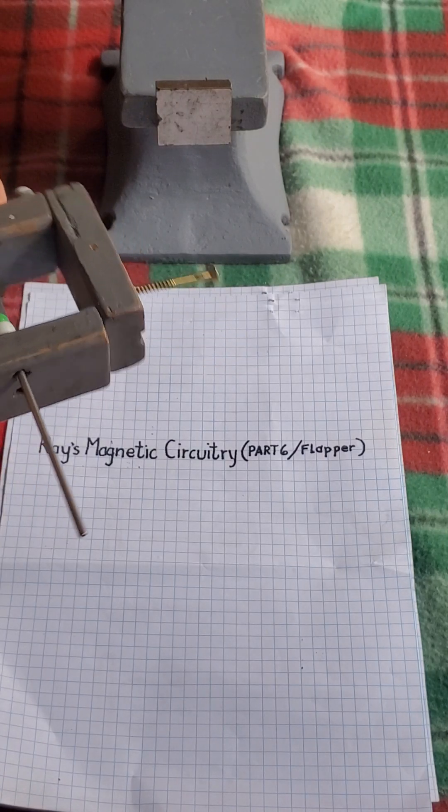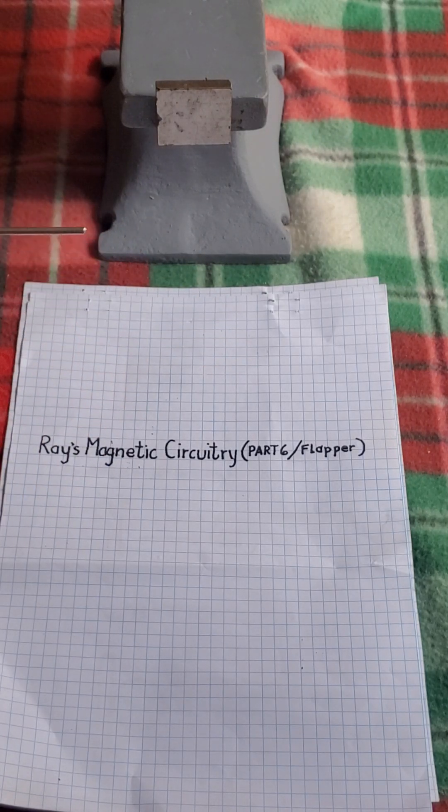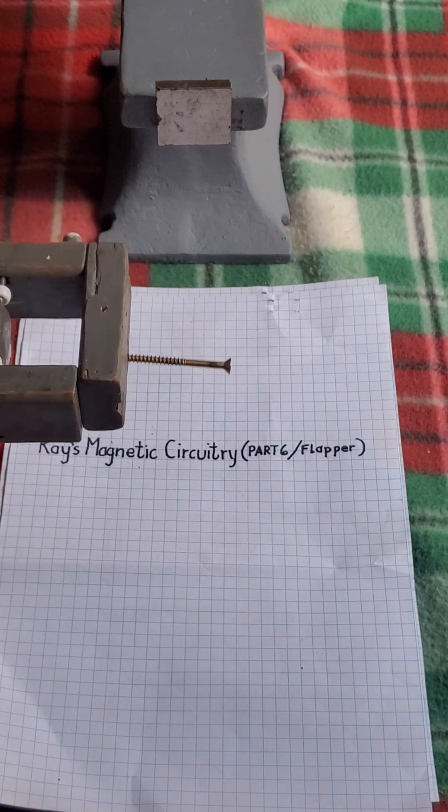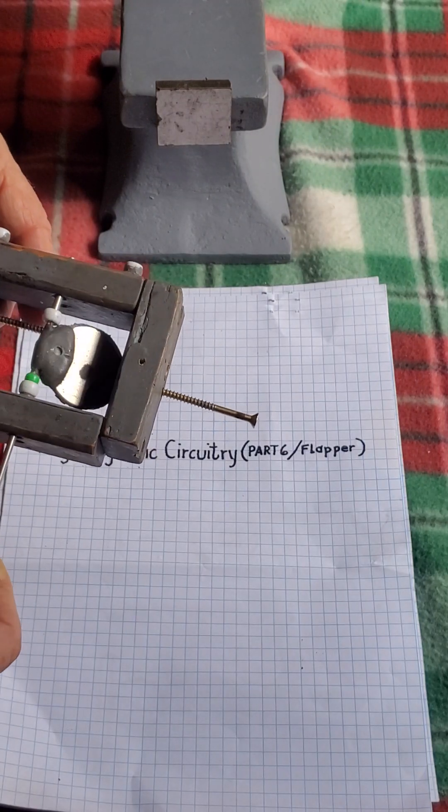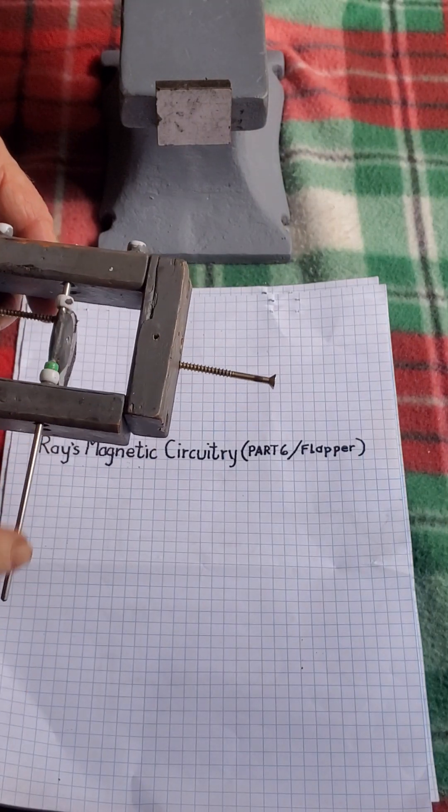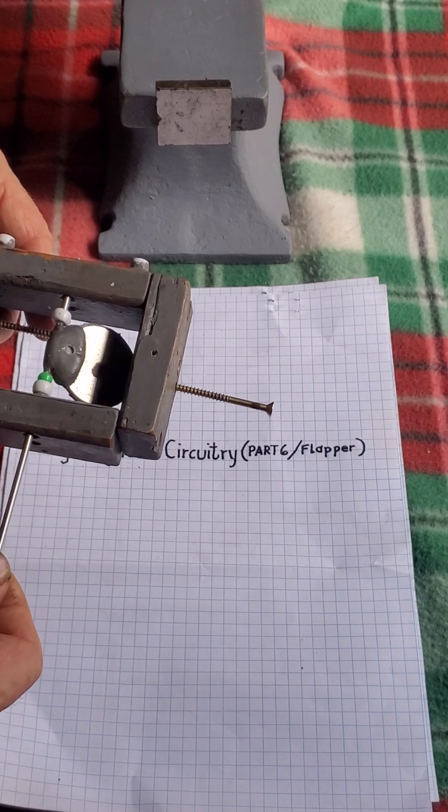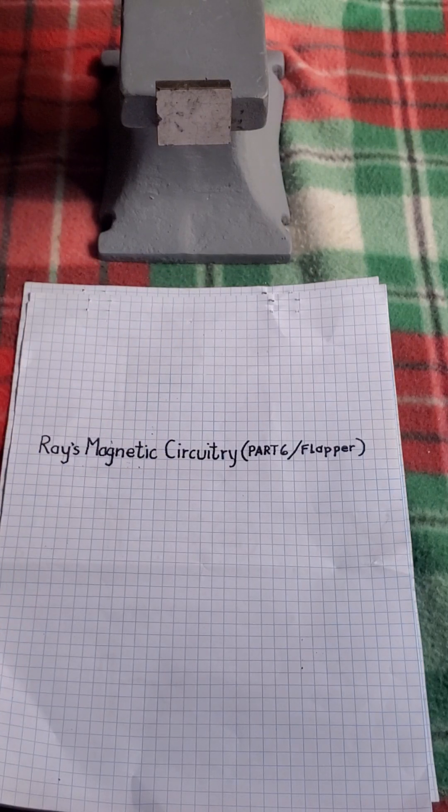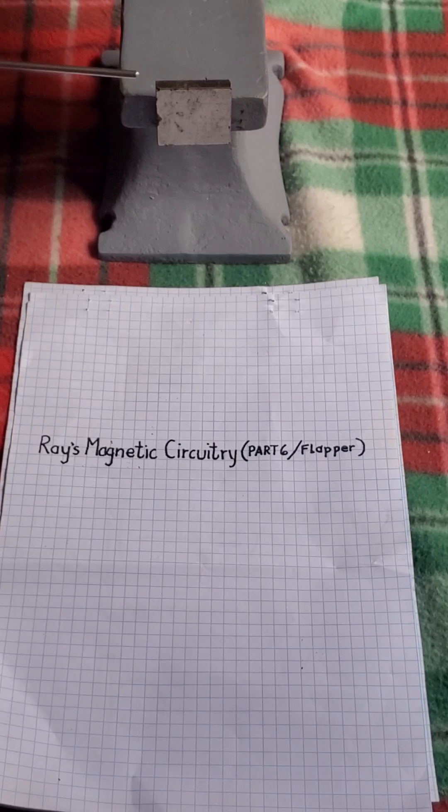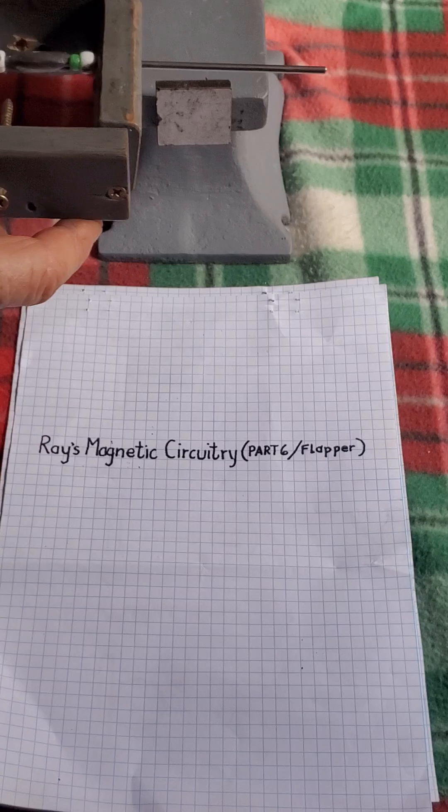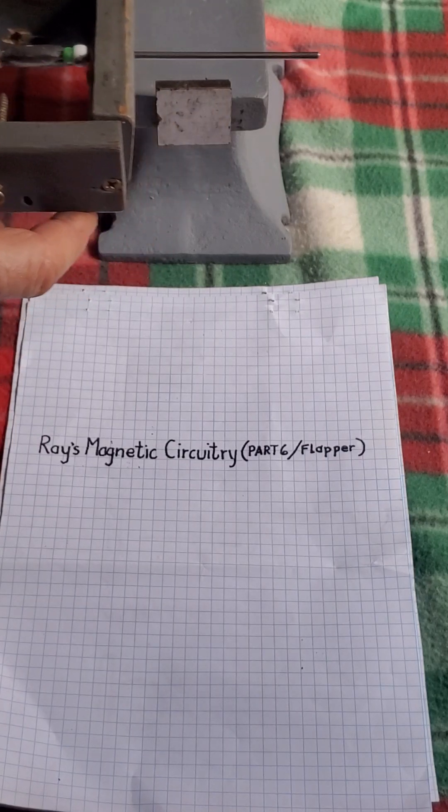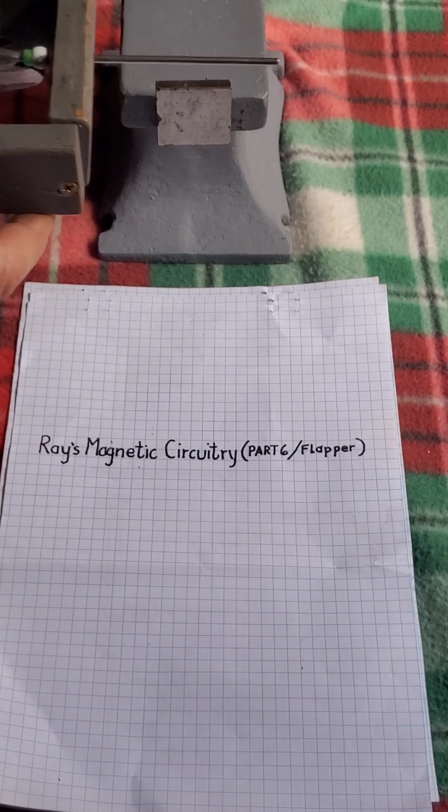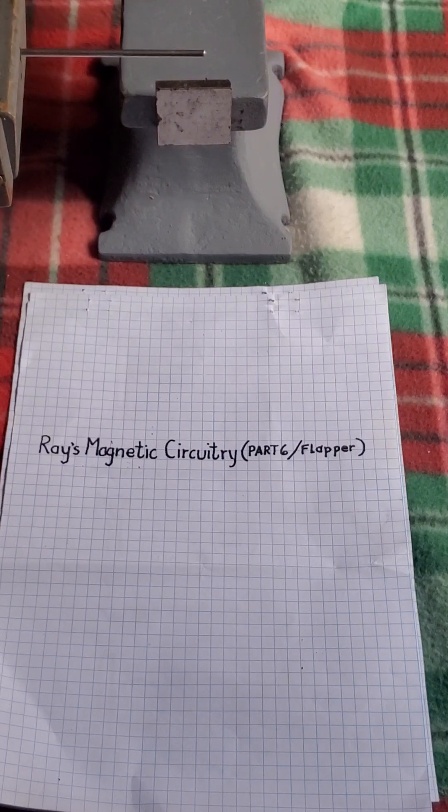This is what I cover in my video: over-unity designs, reactions, effects. The flapper is a magnet that is placed on a bar, able to flap freely. When brought into the area of another magnet, those two interacting fields cause a special reaction with the flapper.